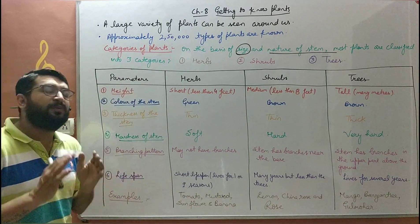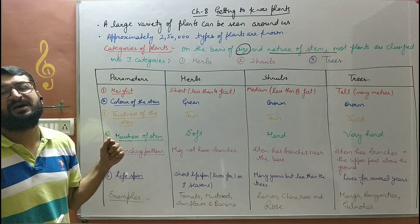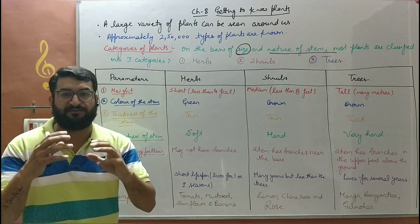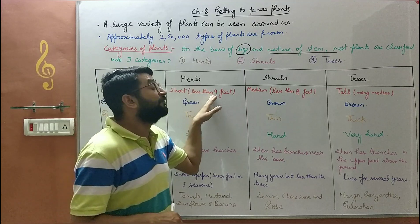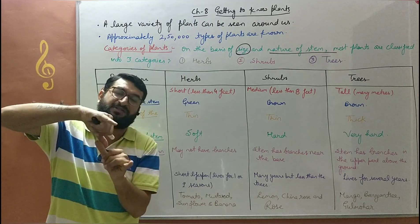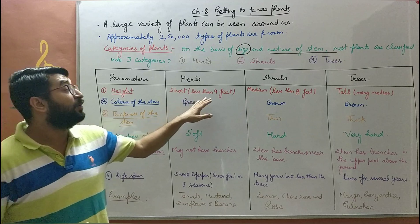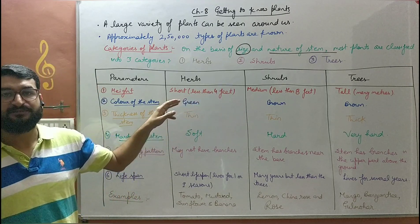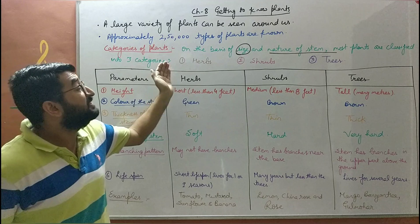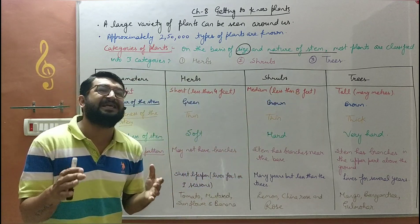We will discuss the categorization of plants into herbs, shrubs, and trees on certain features. The first parameter is height. Herbs are shorter in length — less than four feet. One foot is approximately 12 inches on a scale. Shrubs are medium in size — longer than herbs but smaller than trees. Their height is usually less than eight feet.